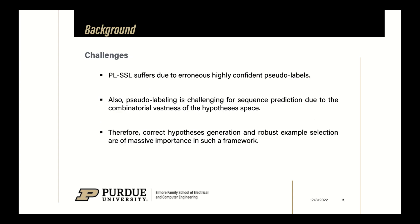Nonetheless, pseudo-label-based semi-supervised learning suffers due to the inclusion of incorrectly labeled samples. Furthermore, this problem exacerbates in the case of sequence predictions due to the combinatorial vastness of the predicted hypothesis space. Therefore, correct hypothesis generation and selection are of critical importance in such a framework.